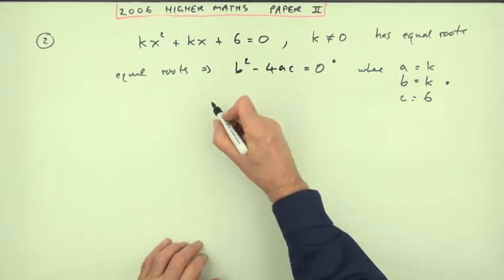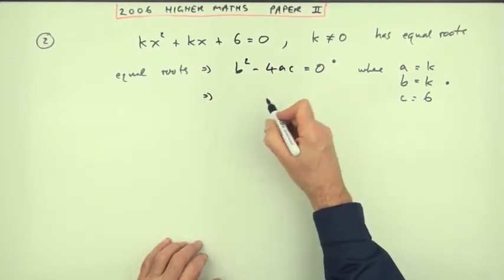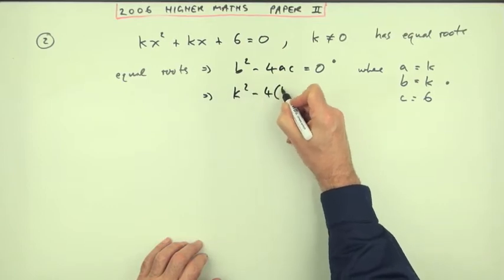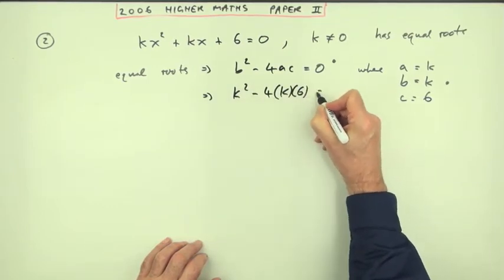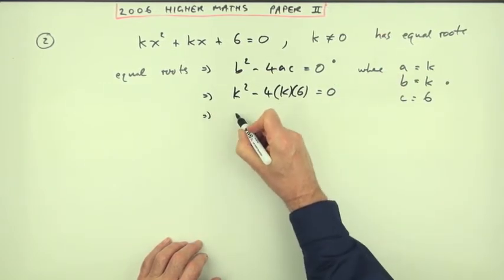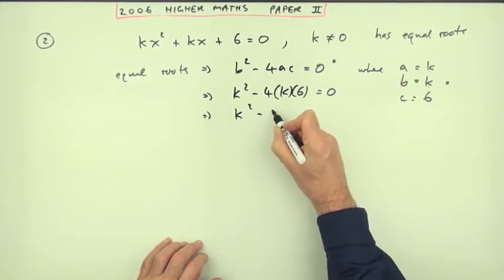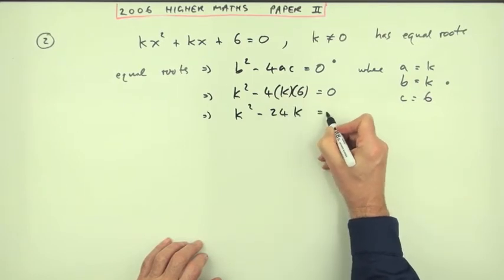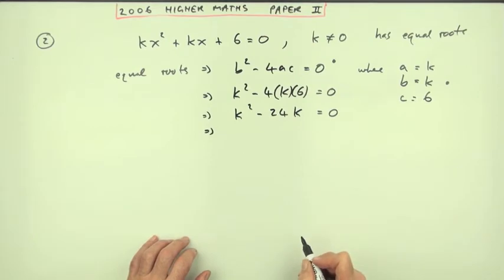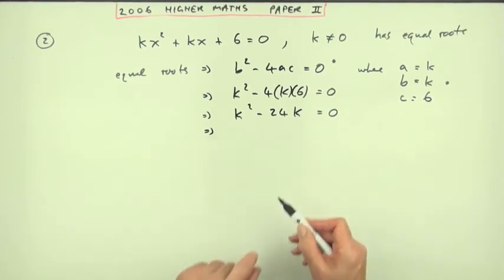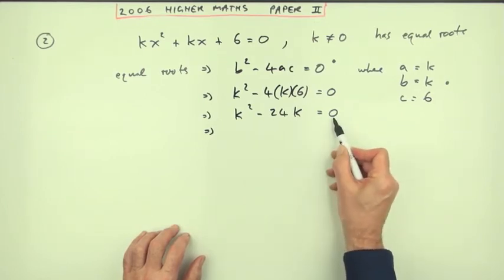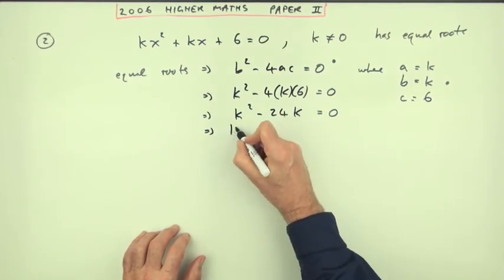Putting them in as before: b squared minus 4ac, k squared minus 4 times k times 6 equals zero. That would give you k squared minus 24k equals zero. That's still not another mark because all you've done is four times six. Now how do you solve that equation? Factorize it. It's equal to zero, so factorize it. Take out the k and you've got k minus 24 equals zero. That's worth a mark.